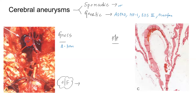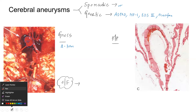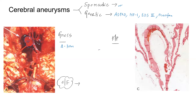In histopathology, what you are going to get is absent smooth muscles and absent internal elastic lamina. So there is absence of smooth muscles and internal elastic lamina, and the intima will be completely hyalinized. So there is hyalinization.